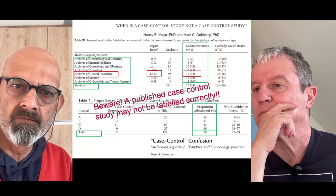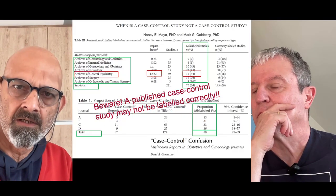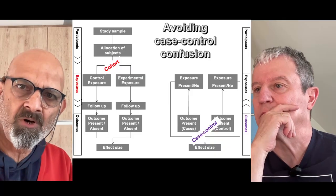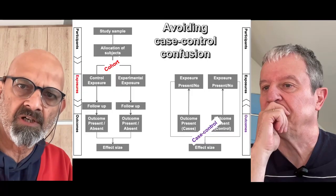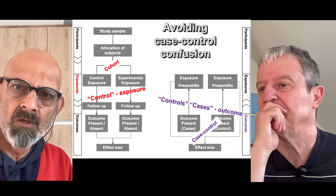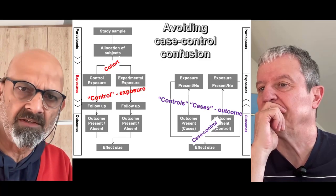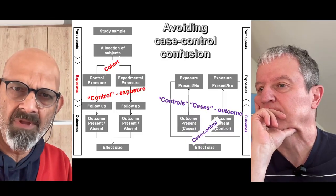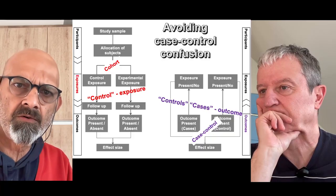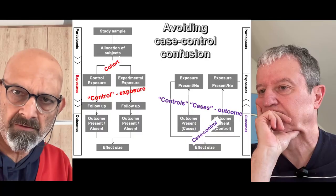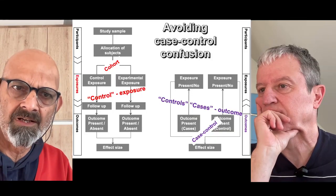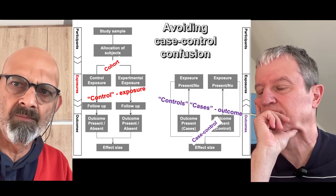With this in mind, we bring this video to an end with our summary about how to avoid the case control confusion. The main problem arises because the word 'control' exists in a cohort study describing exposure, and the word 'control' also exists in the description of the outcome in the case control study. Just because the word 'control' exists in the title, abstract, or methods does not make the study a case control study. Determining whether the word 'control' refers to exposure or to outcome is what will help you avoid confusion.